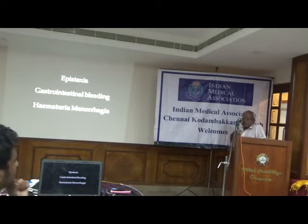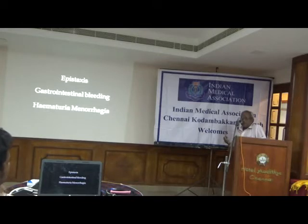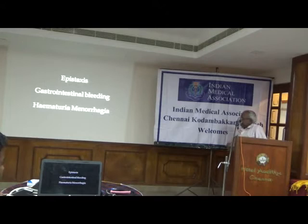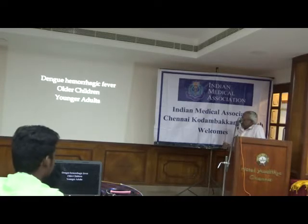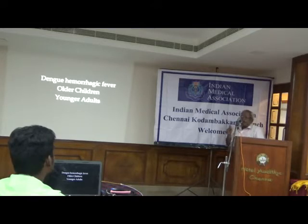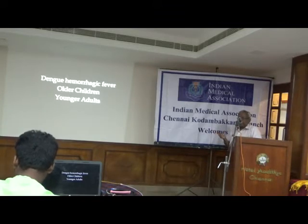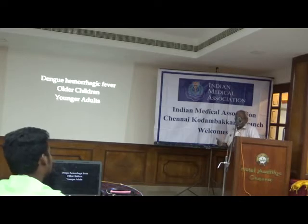One of the best practical methods of approaching acute febrile illness is to go through it system-wise: is it a CNS infection, cardiovascular or endocardial infection, abdominal infection, protozoal infection, or bacterial infection? A stepwise approach to acute febrile illness is practical at the bedside. Epistaxis, gastrointestinal bleeding, and hematuria are the bleeding manifestations of dengue fever. Dengue hemorrhagic fever occurs in older children and younger adults — this is the panic that has been caused in society, as dengue can kill within 48 to 72 hours.